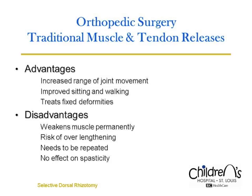Muscle and tendon releases are often used. Orthopedic surgeries can improve joint range of movement, sitting, and walking. Orthopedic surgery is the best choice for fixed deformities. However, there are significant disadvantages associated with traditional muscle-tendon lengthening, including permanent weakness of lengthened muscles, risk of over-lengthening, and the surgery often needs to be repeated as children grow. Muscle and tendon releases do not address the root problem of spastic cerebral palsy, namely spasticity. Rather, it addresses the result of prolonged spasticity.